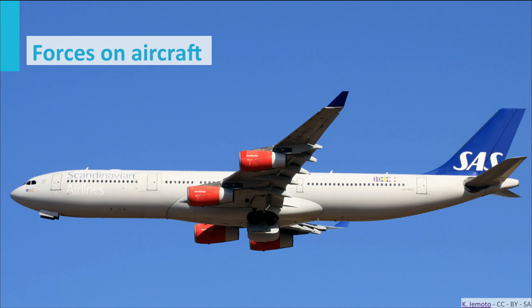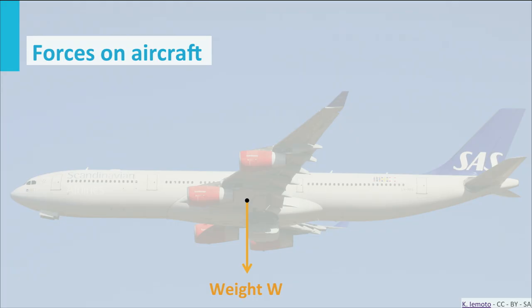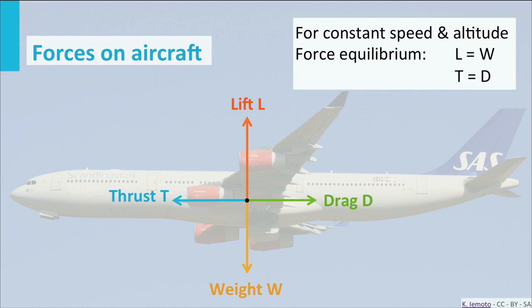Before ending this first lecture I would like to introduce the main forces acting on an aircraft. If we assume a steady horizontal flight we may distinguish four forces: first the weight, the downward force representing the weight of the aircraft; then the lift, which is generated to counteract the weight; third the drag, the resistant force experienced when moving through air; and finally the thrust, needed to overcome the drag. When flying at constant speed and altitude the equilibrium equations are simple: lift equals weight and thrust equals drag.